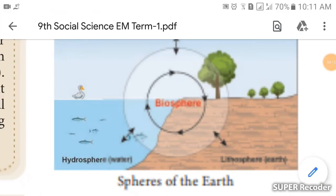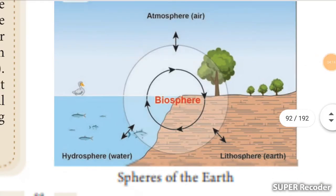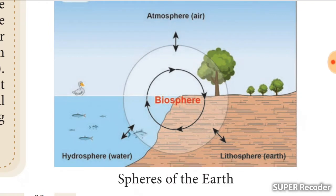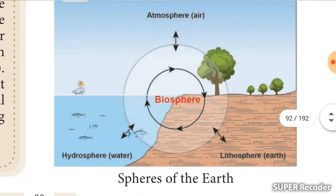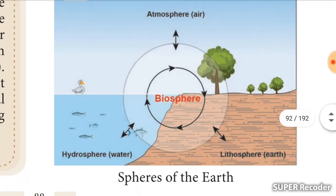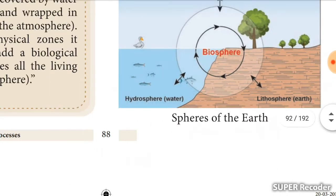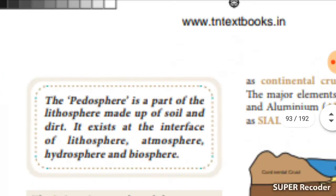See this diagram — it shows the earth as a round shape. In the middle is the biosphere, the topmost layer is called the atmosphere, the second layer is called the hydrosphere, and the third is called the lithosphere. These are the four spheres of the earth.